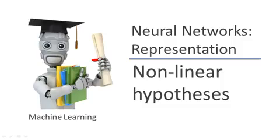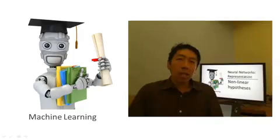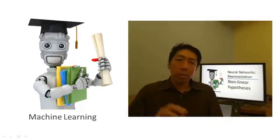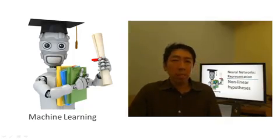In this and the next set of videos, I'd like to tell you about a learning algorithm called a neural network. We're going to first talk about the representation, and then in the next set of videos talk about learning algorithms for it. Neural networks is actually a pretty old idea but had fallen out of favor for a while, but today it is the state-of-the-art technique for many different machine learning problems.